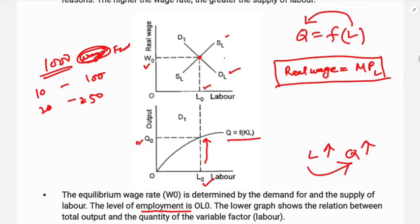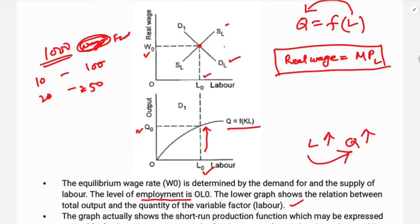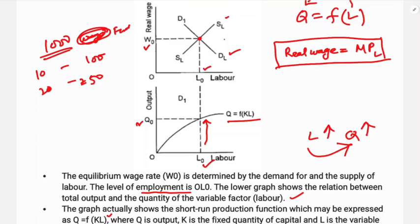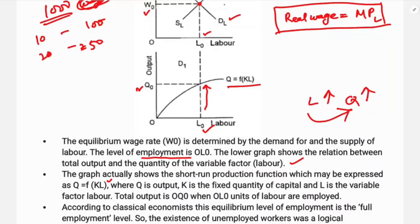The lower graph shows the relationship between total output and the quantity of variable factors. This graph shows the short-run production function, expressed as Q = f(K, L), where Q is output, K is the fixed quantity of capital, and L is the variable labor factor. Total output is OQ0 when OL0 units of labor are employed.